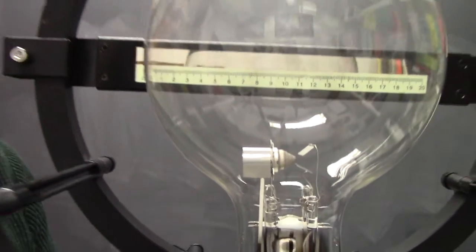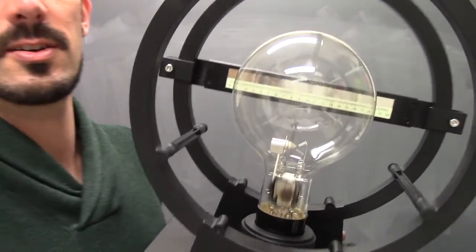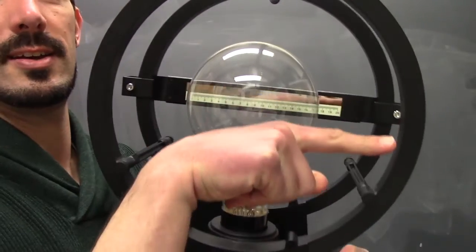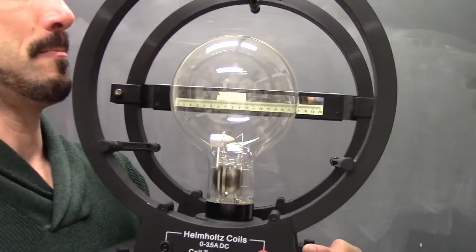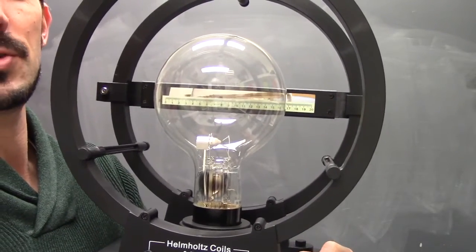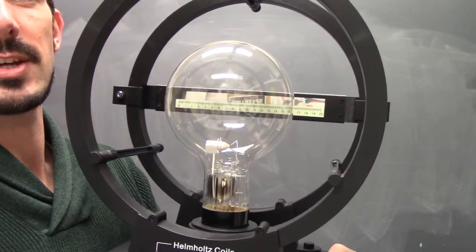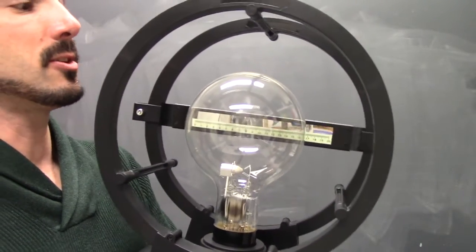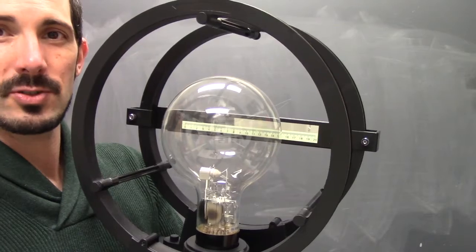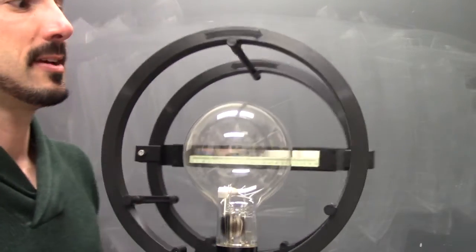And those electrons are going to be going this way, so we're going to follow that path. What we're going to do is try to bend the path of those electrons, and through that we can determine the ratio of the electron charge to the electron mass.